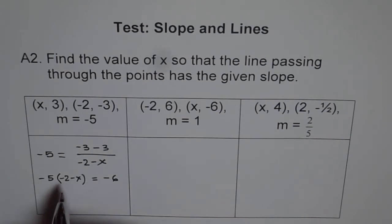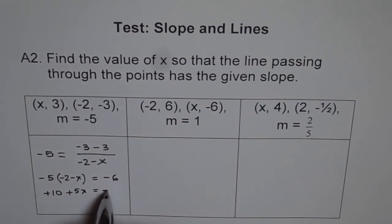Now you can open the bracket and solve. Minus 5 times minus 2 is minus 10 plus 10, and minus minus is plus, so 5x equals minus 6.